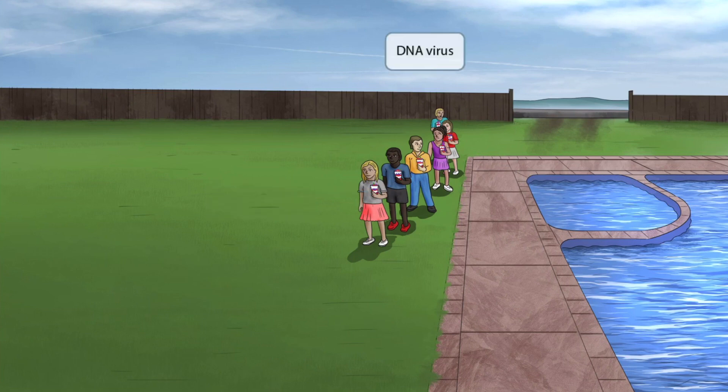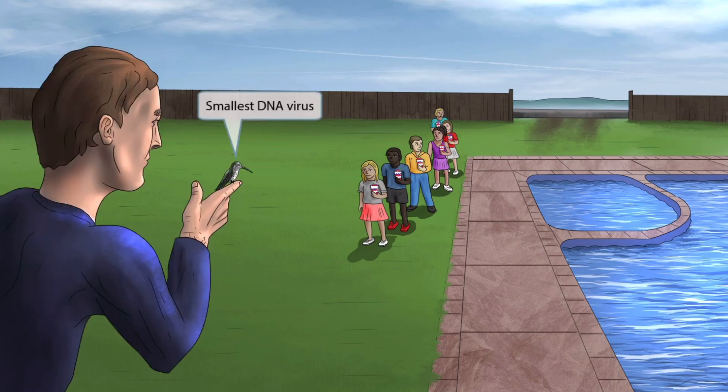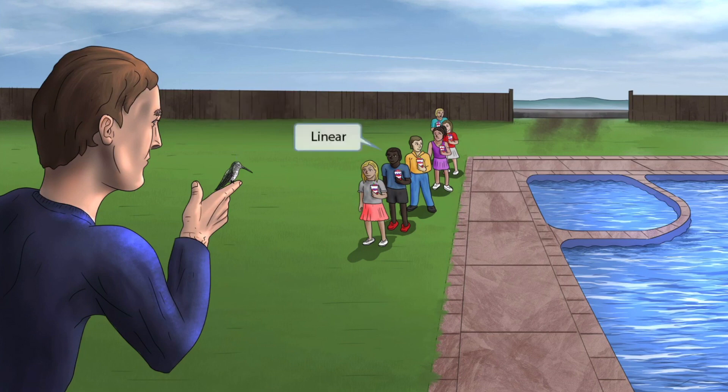Notice that we've included a lot of blue colors in this image, which is to help you remember that this is a DNA virus. You may have noticed that the children are all in a line to see something — they're waiting to see this little hummingbird. Hummingbirds are some of the smallest birds in the world, and this is here to help you remember that parvovirus B19 is the smallest DNA virus. The fact that the kids are lined up waiting to see the bird should help you remember that it's a linear virus.